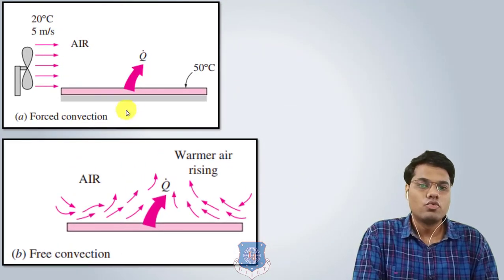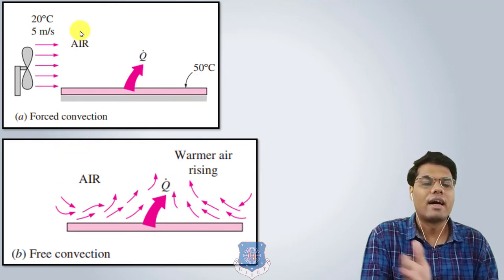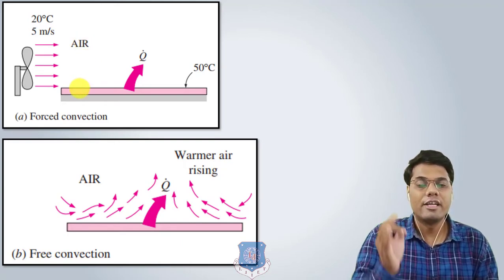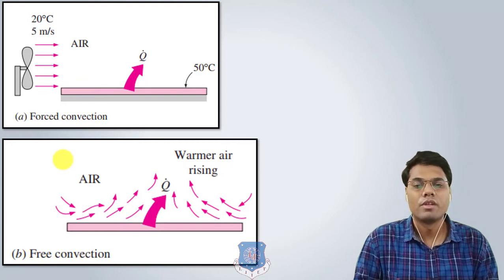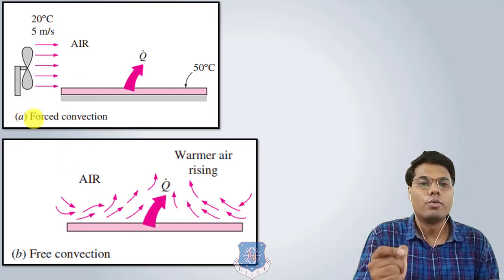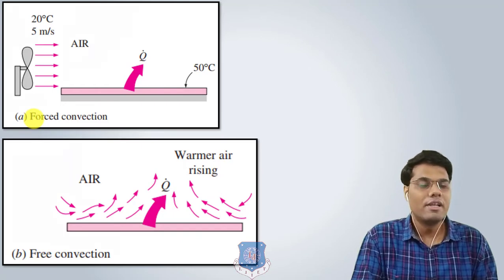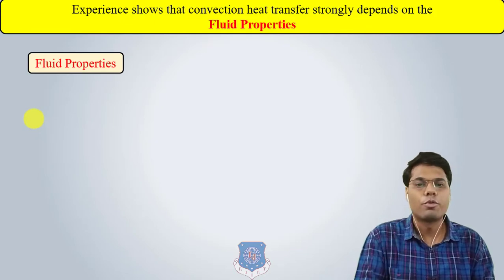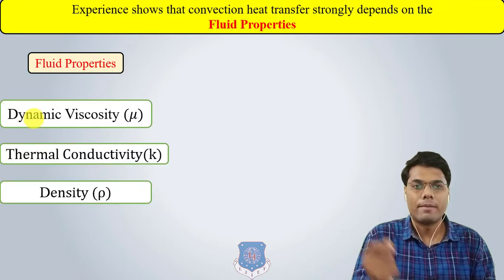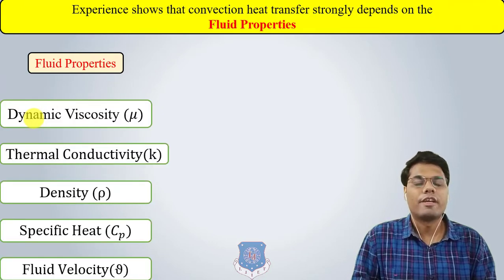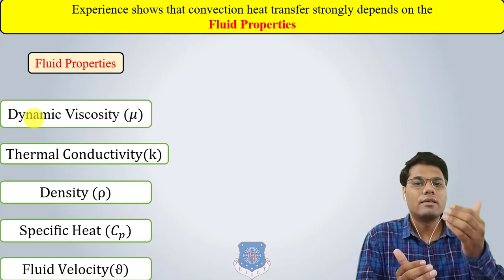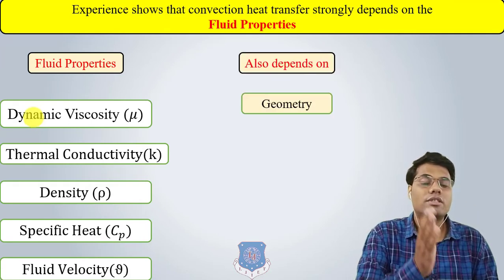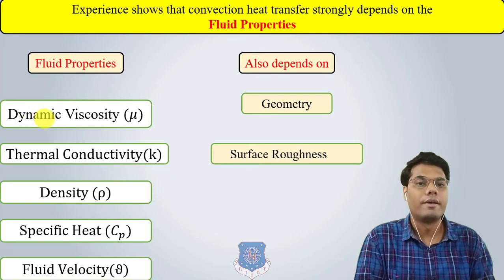When the velocity of air is higher, the convection heat transfer rate is higher in forced convection compared to free convection, because velocity of the fluid plays an important role. Experiment shows that convection heat transfer strongly depends on fluid properties such as dynamic viscosity, thermal conductivity, density, specific heat, and fluid velocity. It also depends on the geometry and surface roughness of the solid.